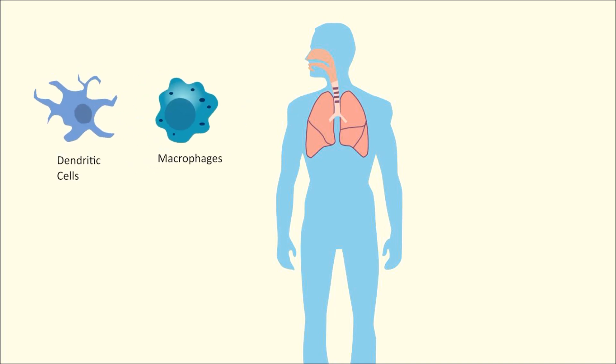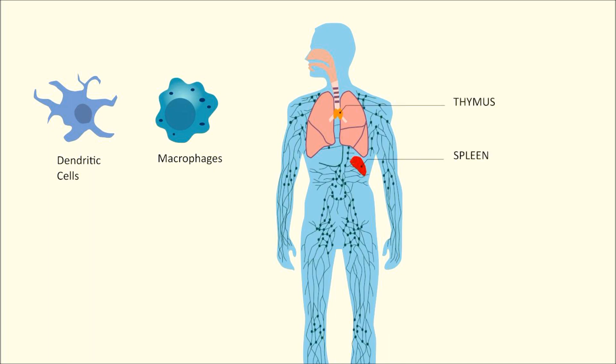These infected cells continue their journey to the lymphoid organs, the spleen, the thymus, and the ganglions. This will cause the primary viremia and lead to an immune suppression.